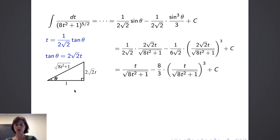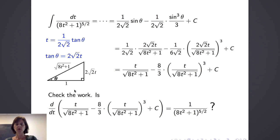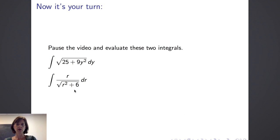To check if our answer is correct, we take the derivative and verify it equals 1 over 8t squared plus 1 to the 5 halves power. I'll leave that for you to check. While you're at it, you can evaluate the other two integrals, checking first whether a simple u substitution can be performed prior to pursuing a trig substitution.